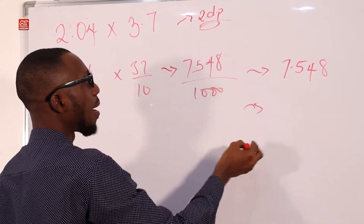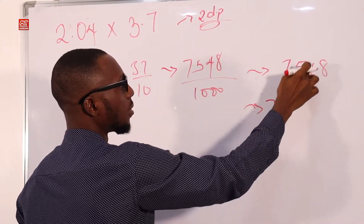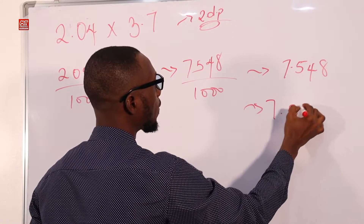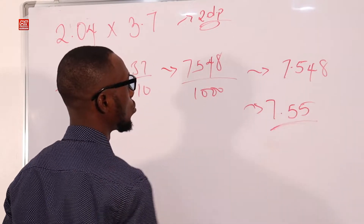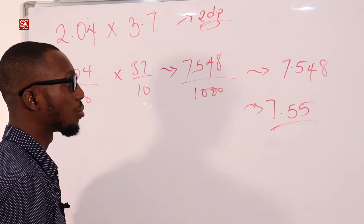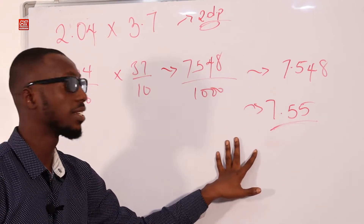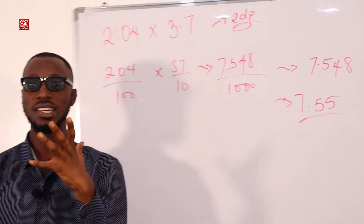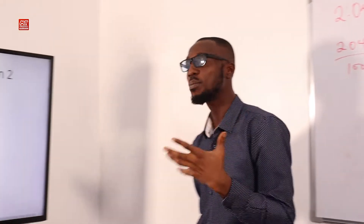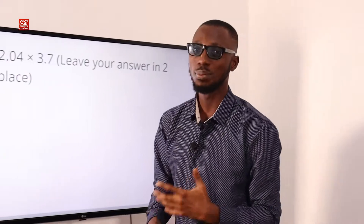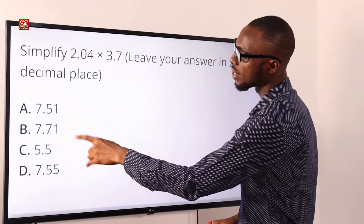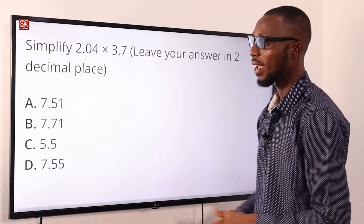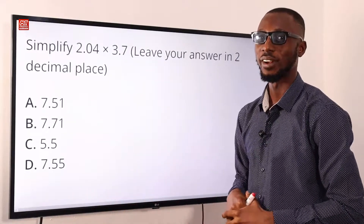To 2 decimal places, we look at the third decimal digit: 8 rounds up the second decimal. So that would be 7.55. Let's go back to the screen to find 7.55 in the options. Option D, 7.55, is correct.